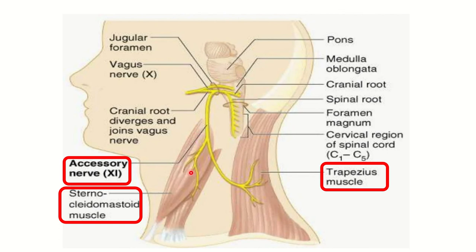Here we can see the sternocleidomastoid muscle with its two heads. Between the two heads at the origin of the muscle, there is a nerve. Tracing it upward, we can see it divides into two parts — one branch to the sternocleidomastoid muscle and another to the trapezius muscle. So trapezius function will be impaired if this nerve is injured.